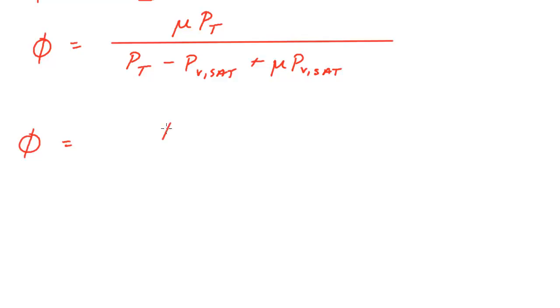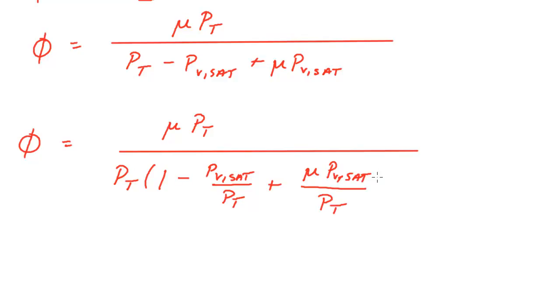What we'll do is pull out a total pressure from this bottom so it cancels out with the top. If I did that, I'd get phi. The top remains the same. And if I did it like this, I took this out. So if I did that, I would get a 1 minus and I would have PV sat over P total plus mu PV sat over P total. And these will cancel.